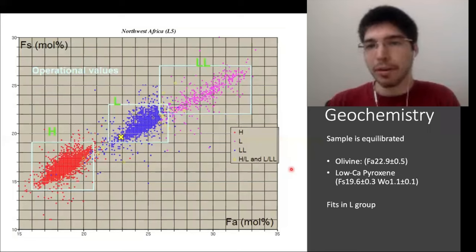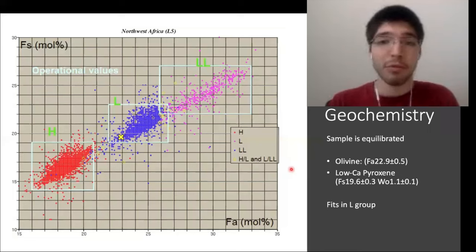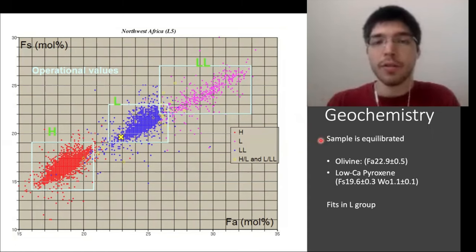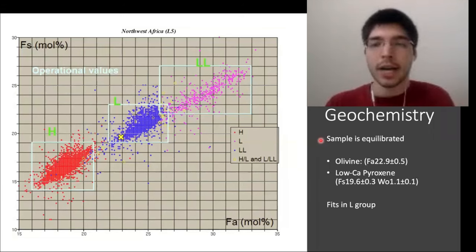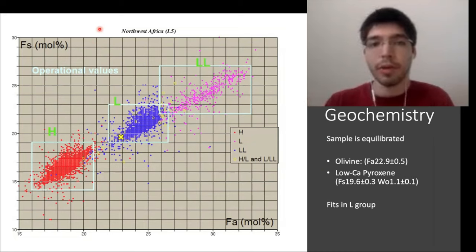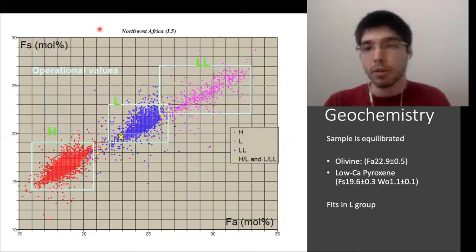The most reliable way to identify the meteorite group is through geochemistry — specifically the individual mineral chemistry of olivine and low-calcium pyroxene. Because this sample is equilibrated, the fayalite numbers of olivine grains and the ferrosilite and wollastonite contents of low-calcium pyroxene grains are very similar across all measured grains. Fayalite is Fe/(Fe+Mg), ferrosilite is Fe/(Fe+Ca+Mg), and wollastonite is Ca/(Fe+Ca+Mg). High-temperature heating on the parent asteroid drives inter-diffusion of iron and magnesium, equilibrating all the grains.